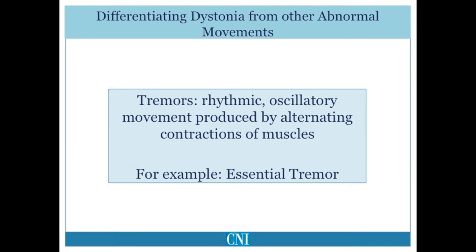Tremor is generally defined as a rhythmic oscillatory movement produced by alternating contractions of opposite acting muscles. Dystonic tremor is usually irregular, unlike most other forms of tremor, and is usually produced by simultaneous or co-contraction of opposite acting muscles.